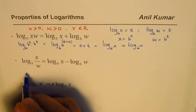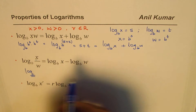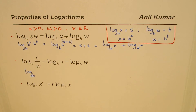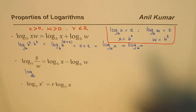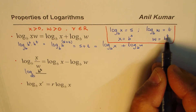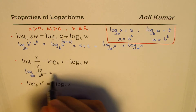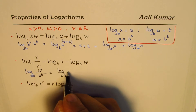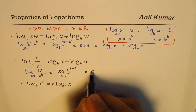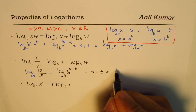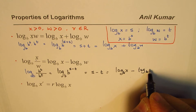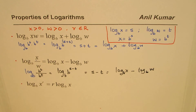With the same substitution we can expand the quotient property. We replace X with B to the power of S and W with B to the power of T. Since exponentials and logarithms are inverses of each other, this gives us S minus T as the exponent, and that equals S minus T, which is log base B of X minus log base B of W. That gives us the second property.